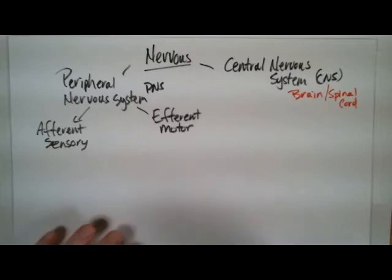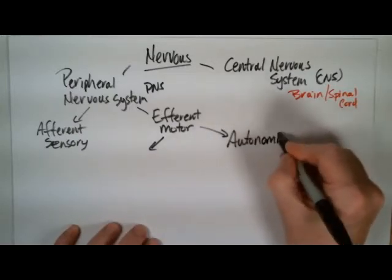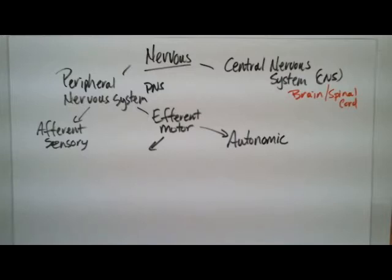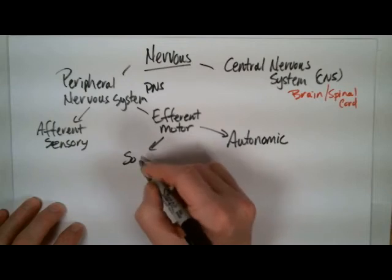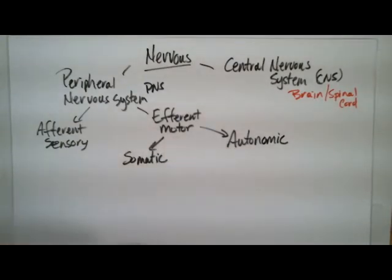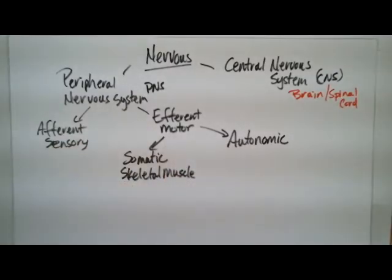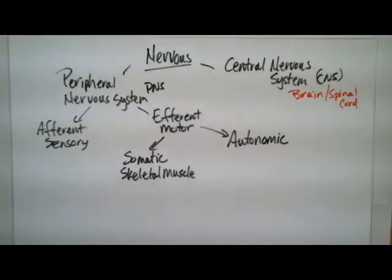With the efferent, or motor side, we divide that into two categories as well: autonomic and somatic. The autonomic is not under conscious control — it's motor output to cardiac muscles, smooth muscles, and glands. The somatic is under your conscious control and affects skeletal muscles. For example, when you want to reach for a cup, the efferent motor neuron sends the signal from a coordinated integration in your brain out to reach and pick up that cup — that is somatic, under conscious control.